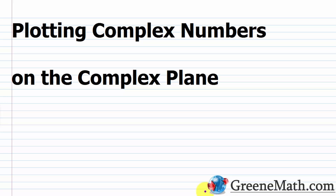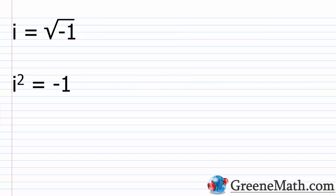In this lesson, we want to talk about plotting complex numbers on the complex plane. At this point in our course, we already know and understand how to use the imaginary unit i. i is defined as the square root of negative 1, or i squared is equal to negative 1. This came in handy when solving quadratic equations — in some situations, you won't get a real solution, so you need to turn to the imaginary unit i.